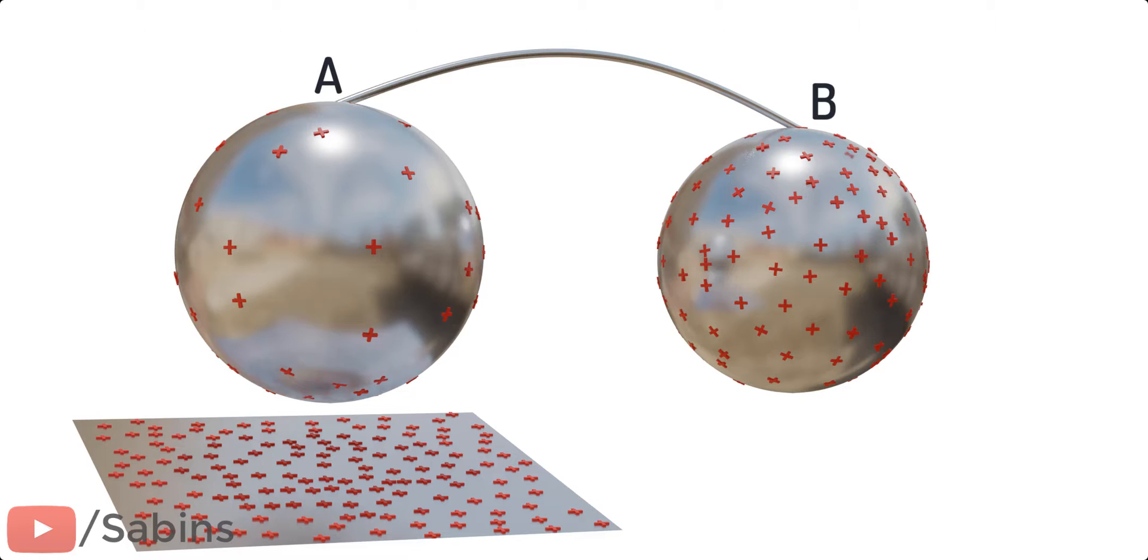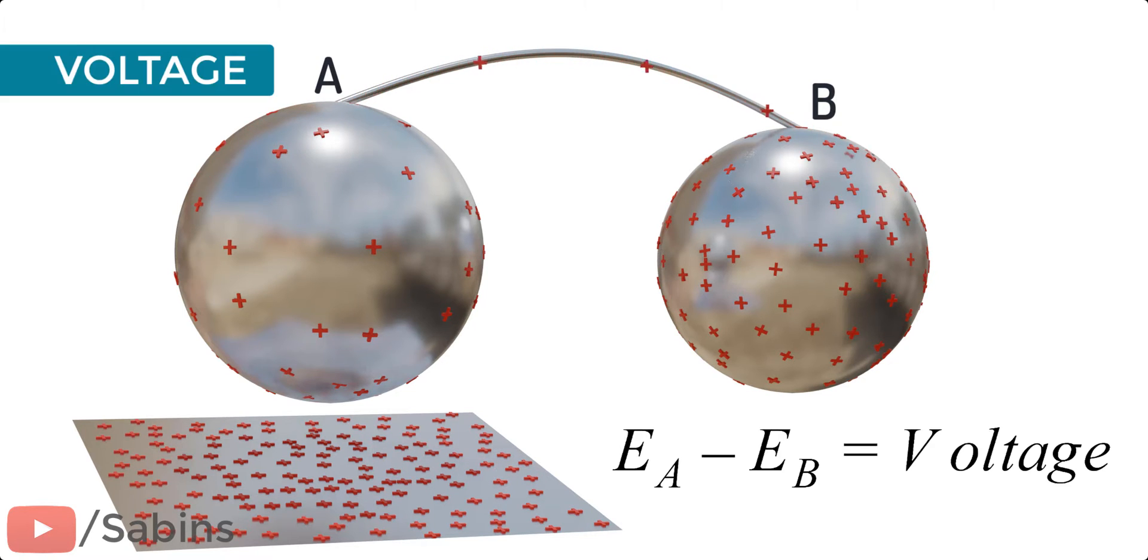In this example, we see that difference in the electric potential is the most crucial factor. This quantity, in short, is known as voltage. However, this accumulation of charges is not the most practical way to generate voltage.